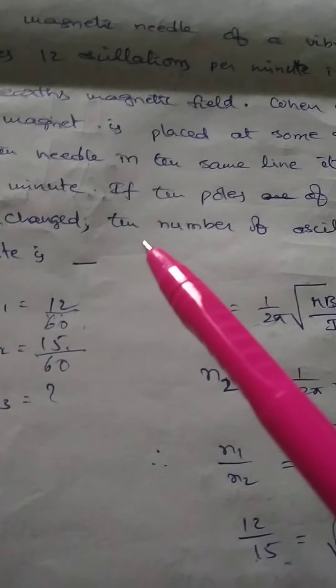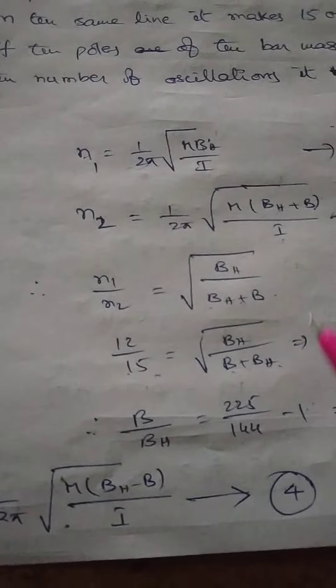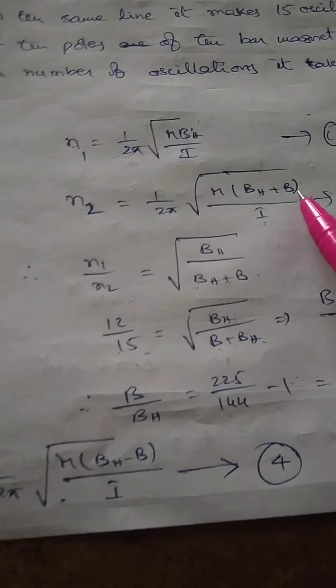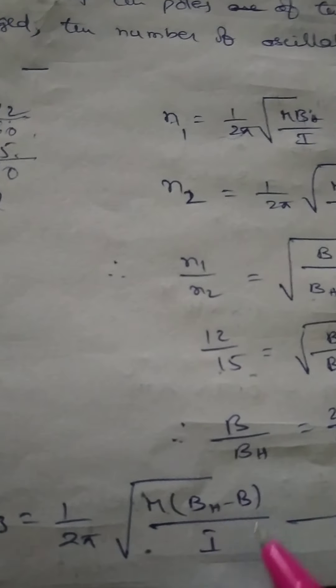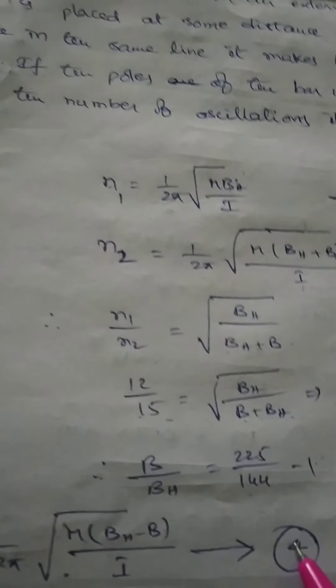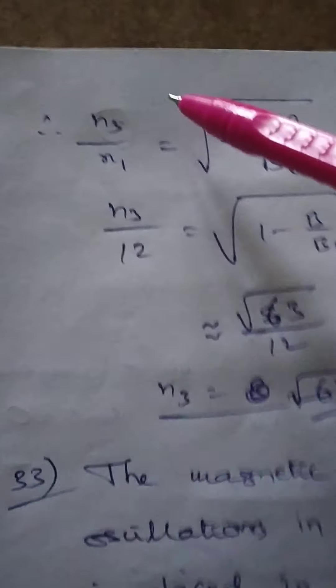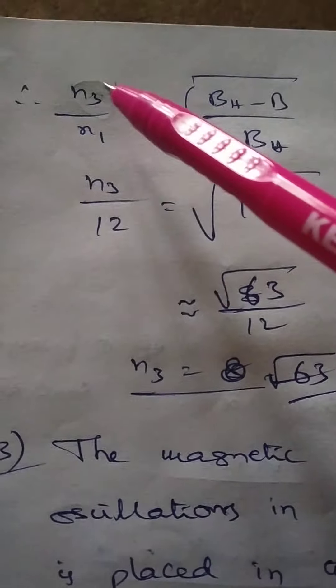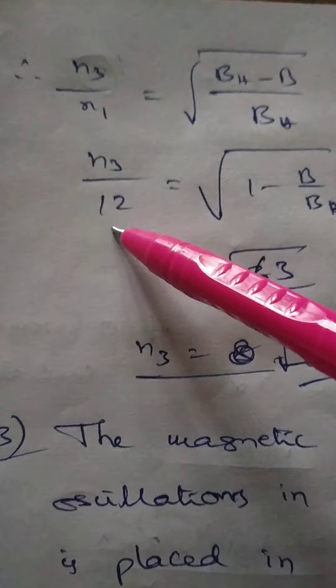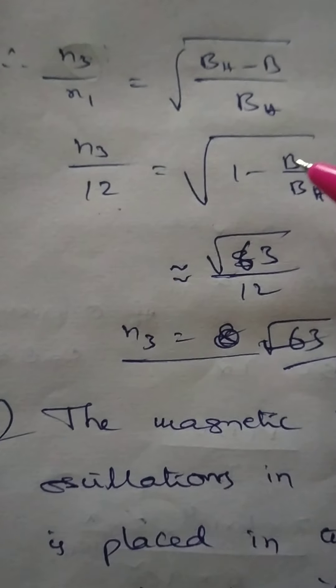In the third case, if the poles of the bar magnet are reversed or interchanged, the net magnetic induction at the same place is Bh − B. The frequency n3 = (1/2π)√(M(Bh − B)/I) — equation 4. Now, n3/n1 = √((Bh − B)/Bh) = √(1 − B/Bh). With n1 = 12: n3/12 = √(1 − 81/144).